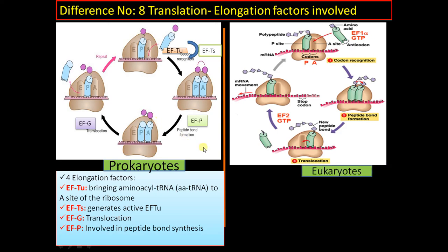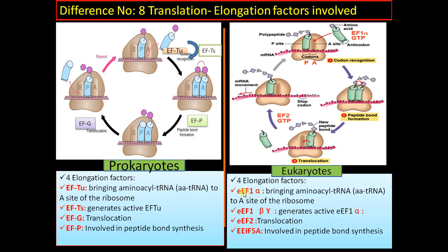In eukaryotes, there are four analogous elongation factors: eEF1α brings aminoacyl-tRNA to the A site of the ribosome; eEF1βγ recycles eEF1α; eEF2 is involved in translocation; and eIF5A is involved in the formation of peptide bonds between amino acids in the P site.